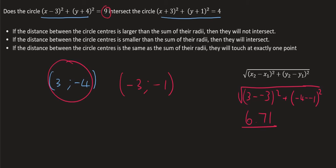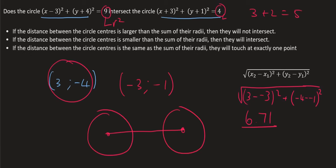Now I need to look at the radius of each circle. This one's radius is 3, and this one's radius is 2 — remember those values represent r squared in the equation. If you add their two radii together, 3 plus 2 gives 5. So these two circles are not going to intersect, because the distance between their centers is 6.71, but the sum of the radii is only 5. They will not add up to more than 6.71, so they won't reach each other.